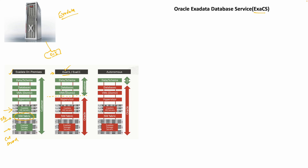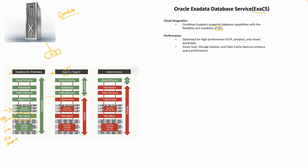With ExaCS, the customer provisions a DOM-U or virtual machine cluster, then has their database, schema, and data on top of that. ExaCS combines Exadata's powerful database capabilities with the flexibility and scalability of OCI. All the capabilities of high-performance OLTP, analytics, and Exadata features like Smart Scan and storage indexes are all available in ExaCS.